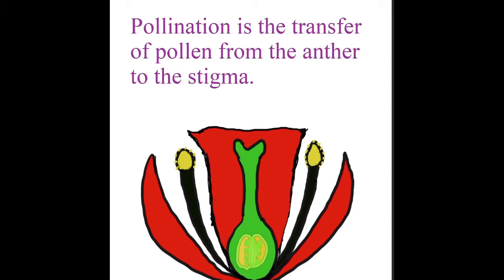Pollination is the transfer of pollen from the anther to the stigma. One of the important keywords in this concept is the word 'transfer.' Many pupils do not know how to explain this concept because they do not put emphasis on this word. The word transfer is actually very important.